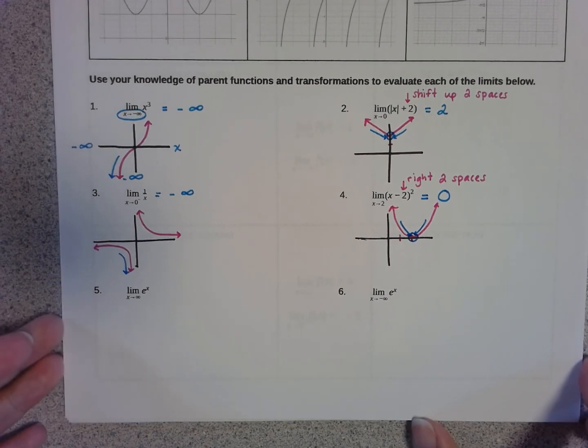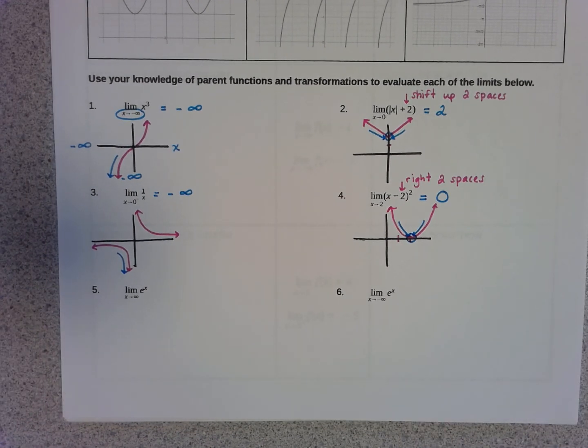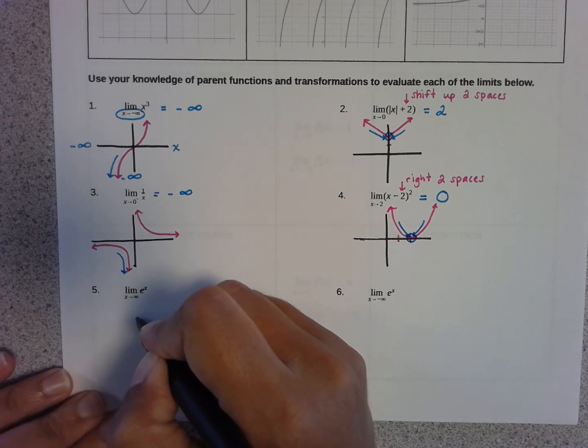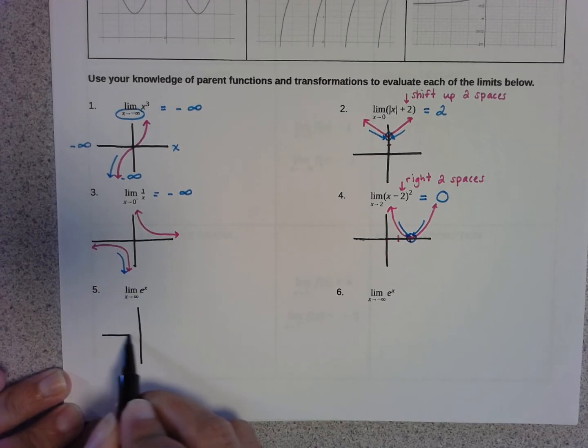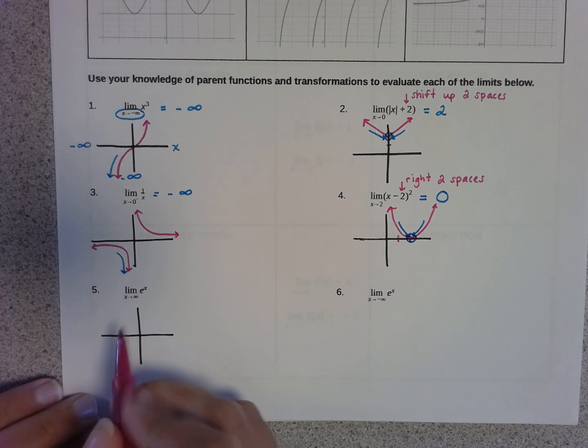For problem number five, it says evaluate the limit as x approaches infinity of e to the x. Now e to the x is the exponential function, which looks like this.